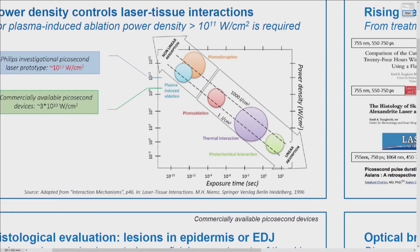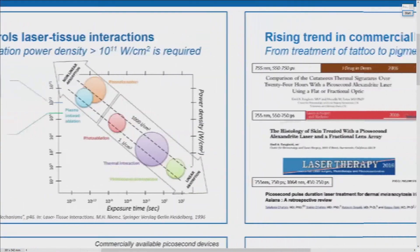At the longer pulse durations and lower intensities the mechanism is mostly thermal. At the higher intensities and shorter pulse durations the interaction mechanism becomes non-linear and essentially chromophore independent. This chromophore independence is the interesting part which people are driving their technologies towards.